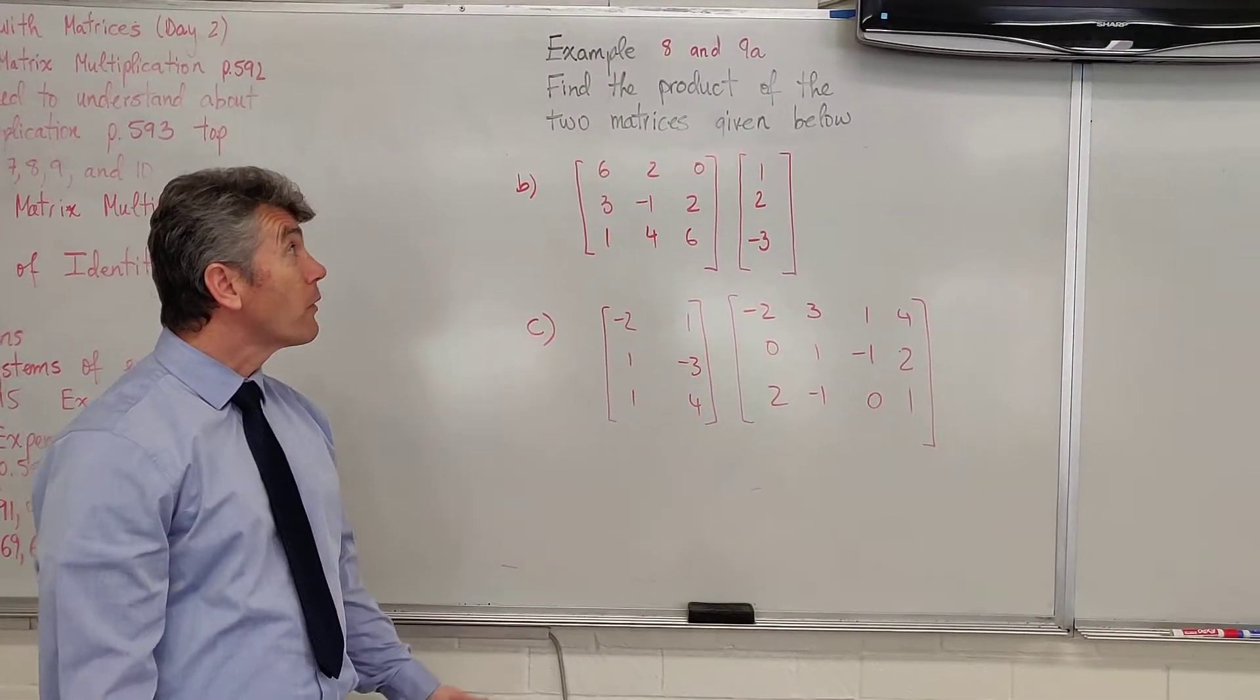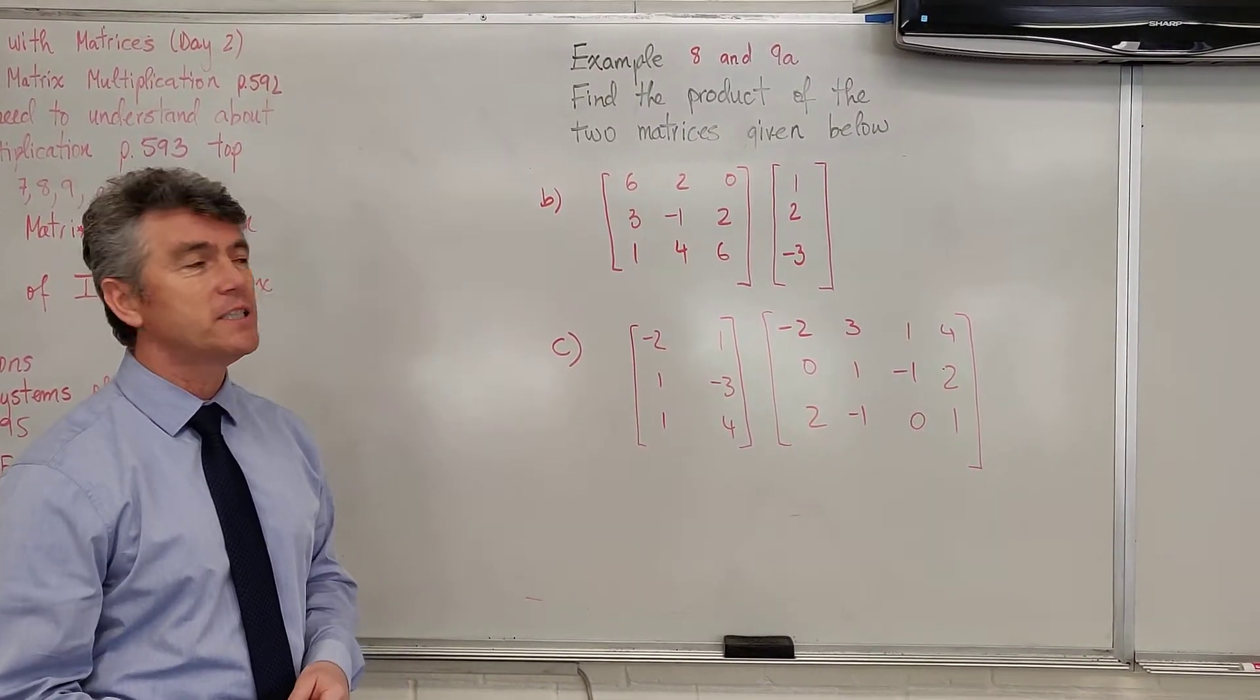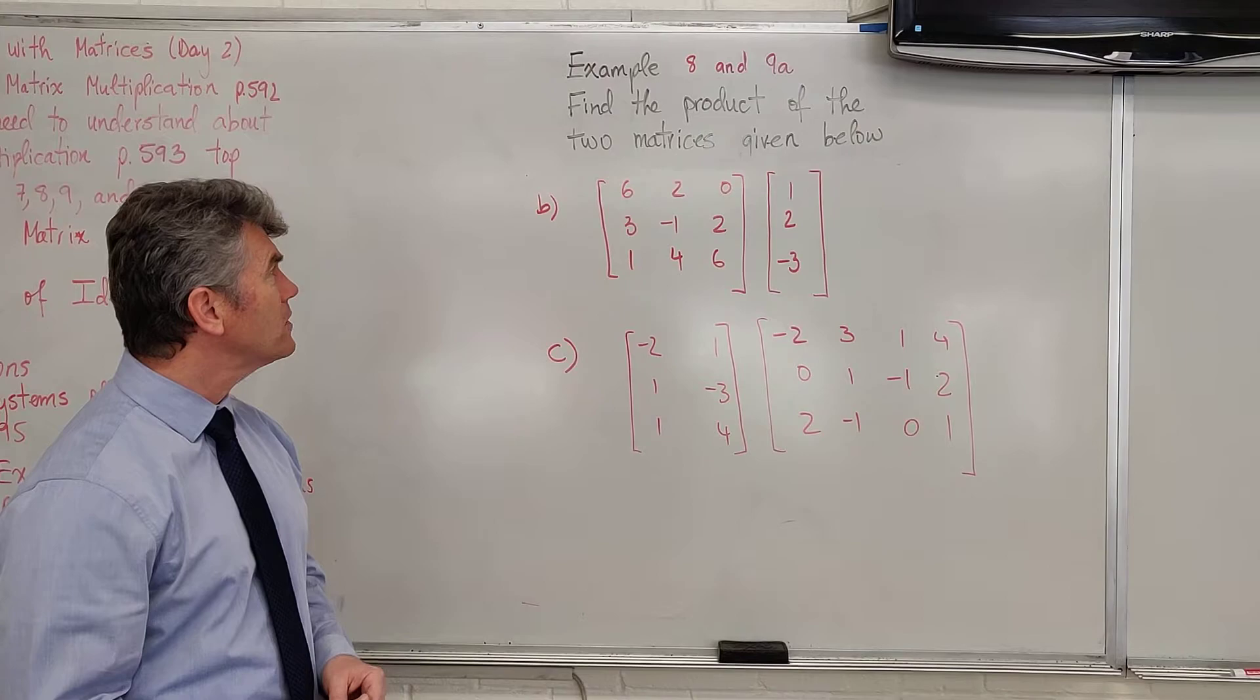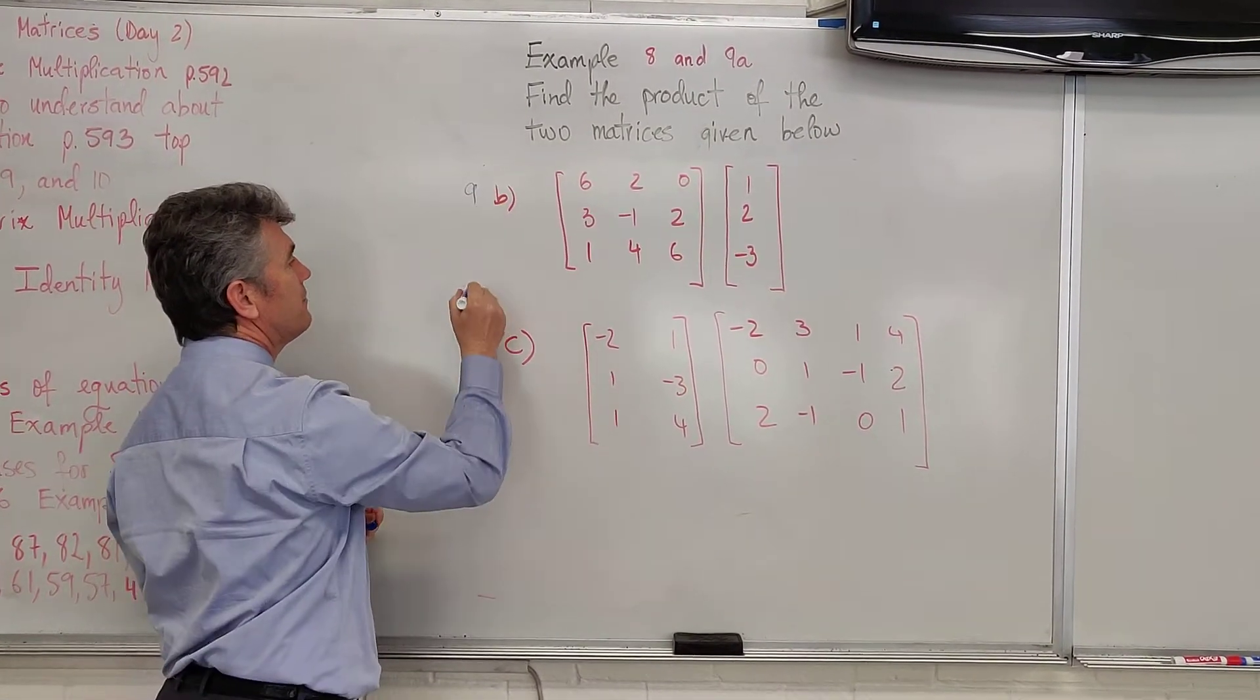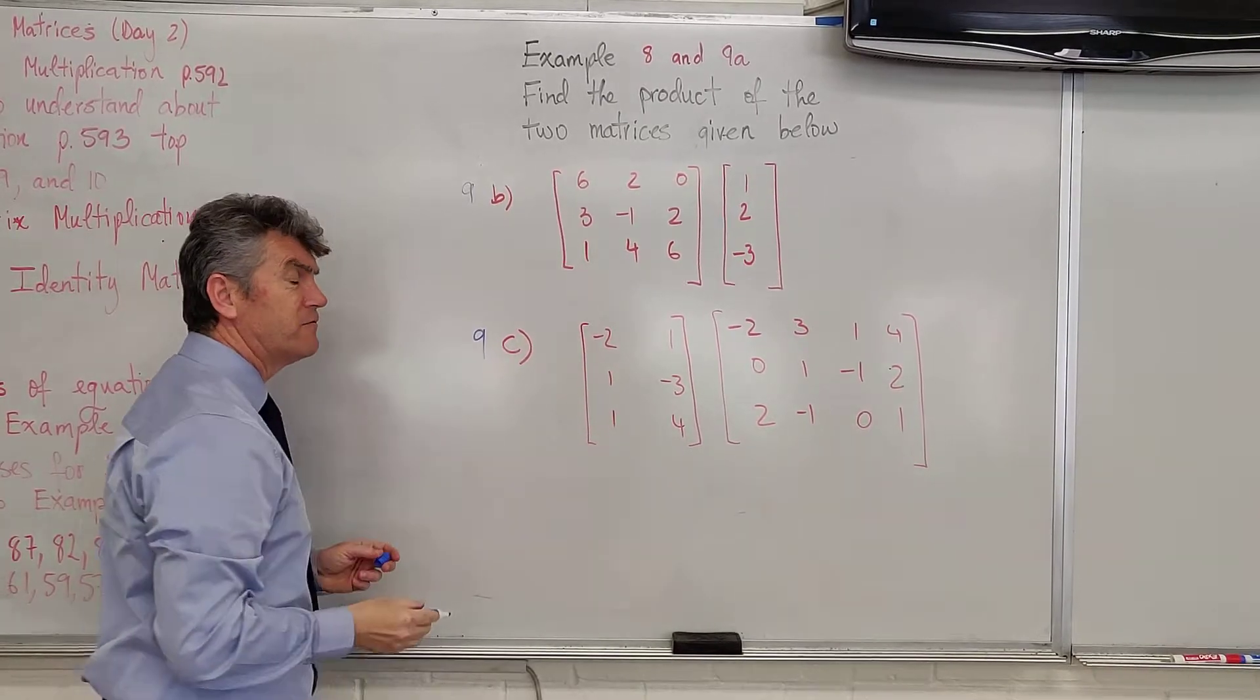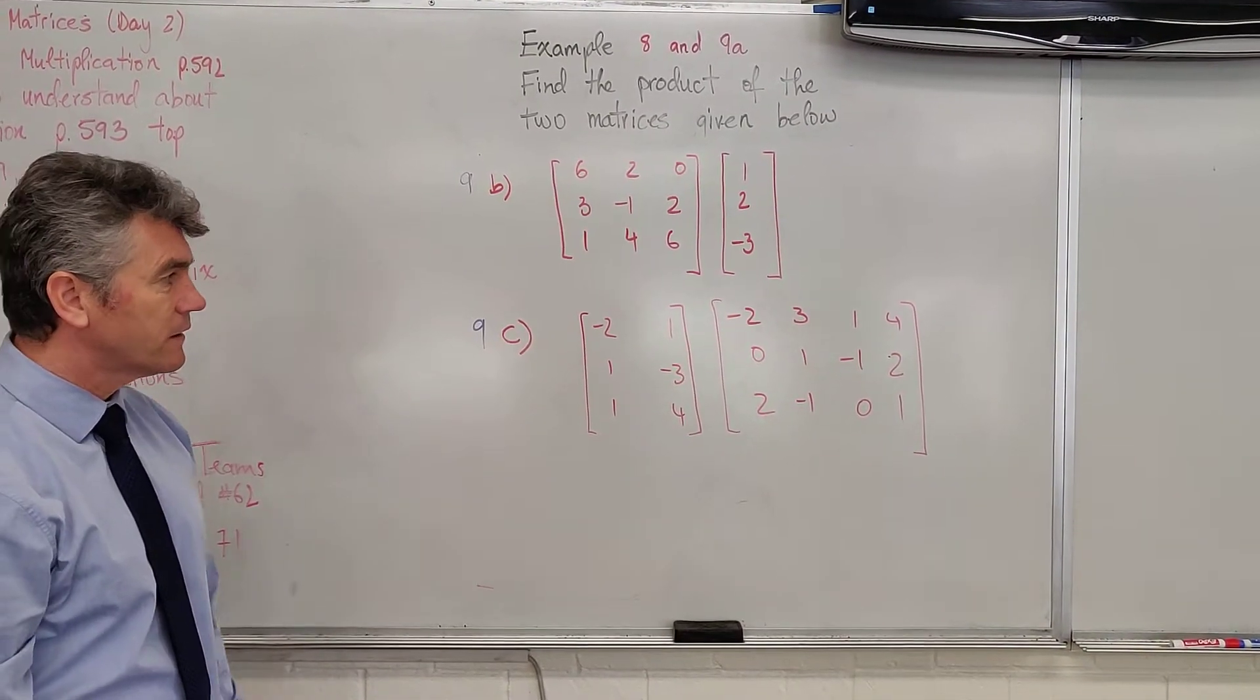We continue to multiply matrices and to learn about the properties of multiplication. We will start with 9c. This is 9b and 9c. Do I have a reason for starting on 9c? Yes. It will be obvious shortly.